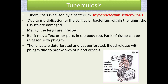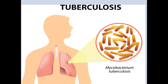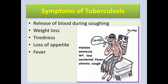During a cough, sometimes blood is released — the patient can identify this. When blood passes with the cough, that is the severe condition of the last stage of tuberculosis. Apart from that, other symptoms include: release of blood during coughing, weight loss (the person gets thin), tiredness, loss of appetite, and fever at night or a mild fever at night.